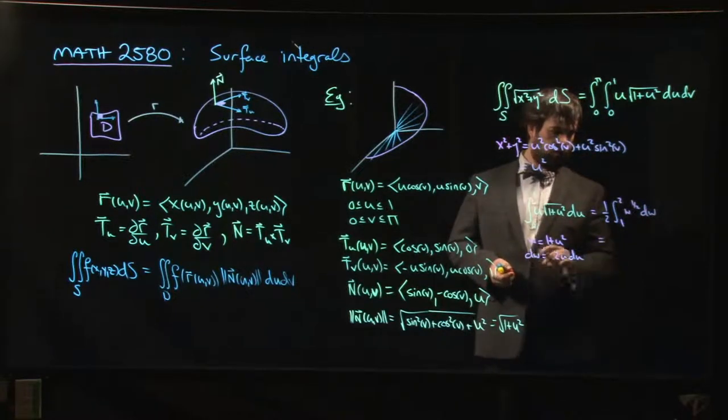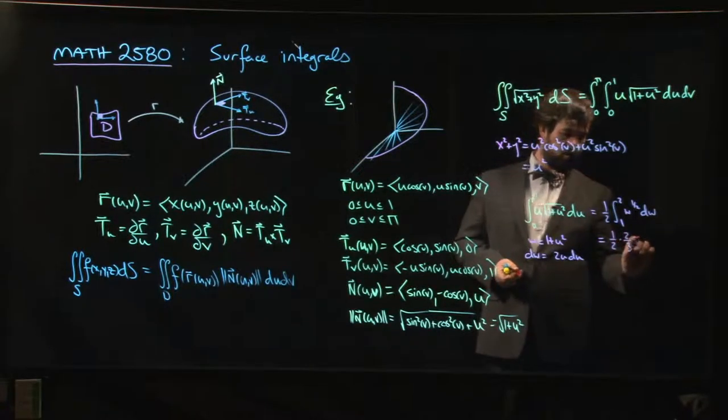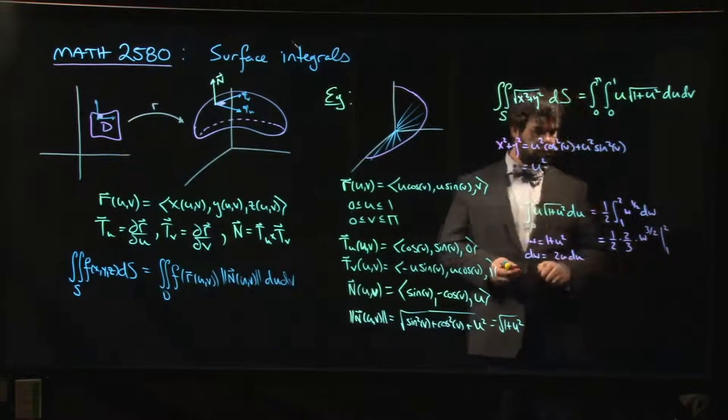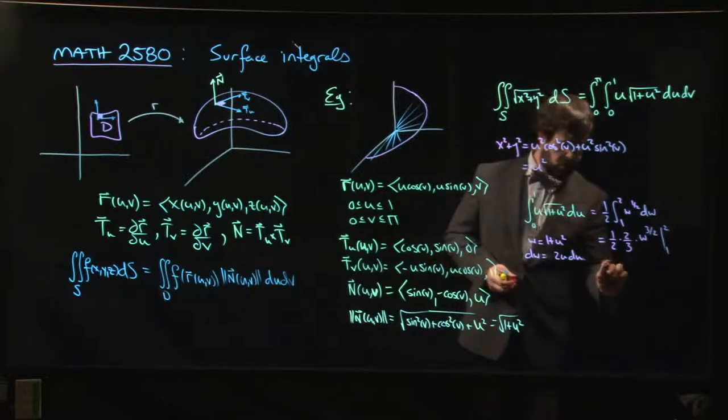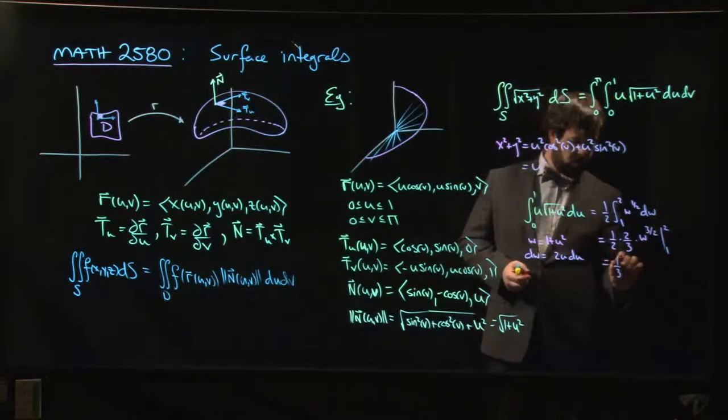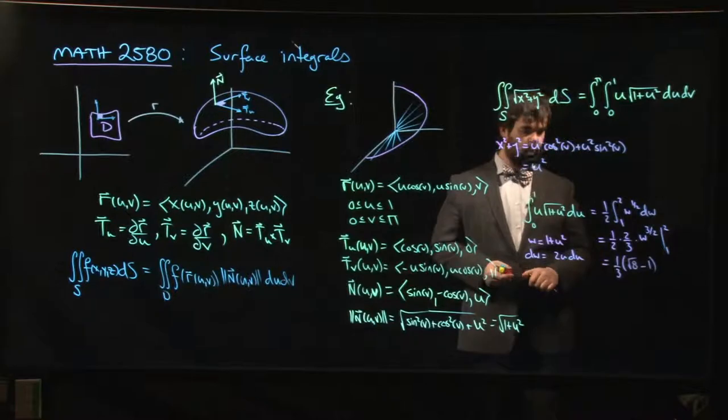So that is going to be 1 half times 2 thirds times w to the 3 halves from 1 to 2. So we get 1 third times square root of 8 minus 1.